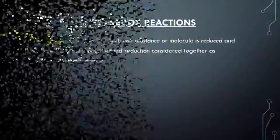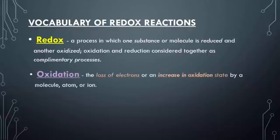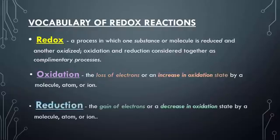So what is redox? Redox is a process in which one substance or molecule is reduced and another is oxidized — oxidation and reduction considered together as complementary processes, which is why we call it redox. Oxidation is the loss of electrons, or an increase in oxidation state by a molecule, atom, or ion. And reduction is the gaining of electrons, or a decrease in your oxidation state by a molecule, atom, or ion.